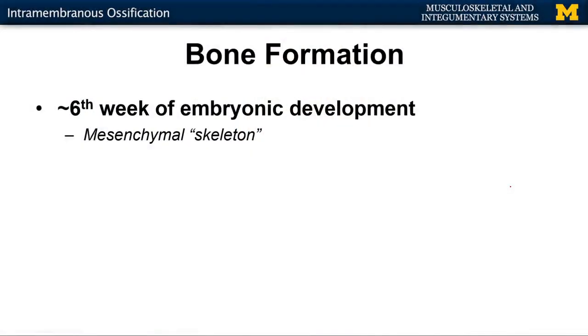Bone starts to develop around the sixth week of embryonic development. So if you've ever been pregnant or know someone that's pregnant, you'll appreciate that bones are starting to form fairly early on. What's actually happening is you're having the creation of what's referred to as a mesenchymal skeleton. This term mesenchyme or mesenchymal will come up over and over again as you talk about different organ systems — this is basically the embryonic connective tissue. A lot of the connective tissues of the body are going to start through this embryonic or mesenchymal component, and that's what's actually starting to develop in the sixth week in utero.